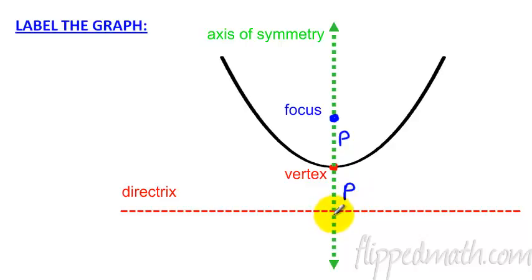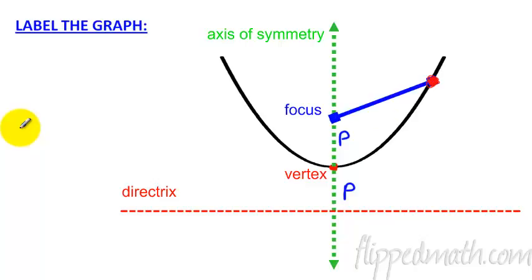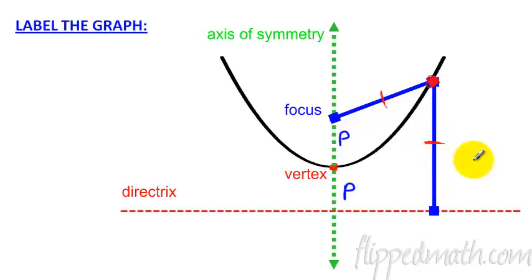Now why do we make this so complicated? Well, it actually has some really cool applications. If I choose any dot on the parabola and draw a straight line to the focus and a straight line to the directrix, these two distances - the distance from that point to the directrix and the distance from that point to the focus - would be identical.